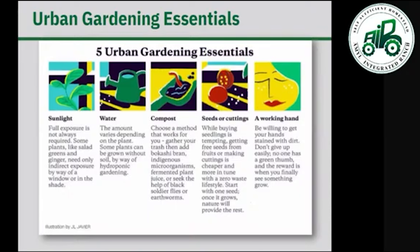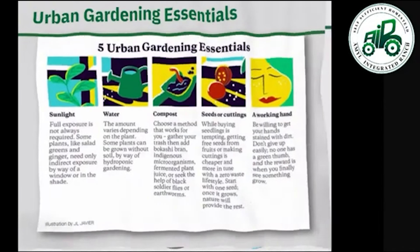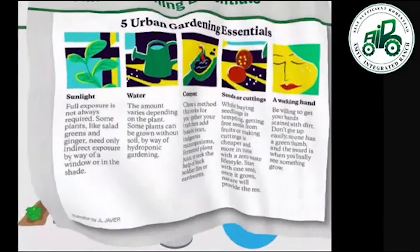Also useful is vermicast — the cast of an earthworm, specifically the African night crawler. For seeds or cuttings, it depends on the preference of the grower. A working hand means being willing to get hands dirty with soil. Don't give up easily — no one is born with a green thumb, and the reward is when you finally see something grow.